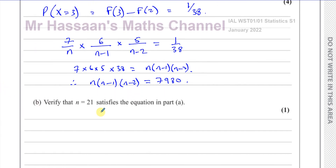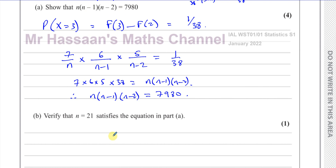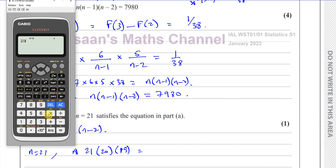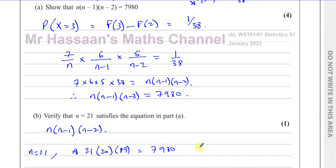Part b says verify that n = 21 satisfies the equation in part a. When n = 21, we get 21 × 20 × 19, which gives 7,980. Therefore n = 21 satisfies the equation.